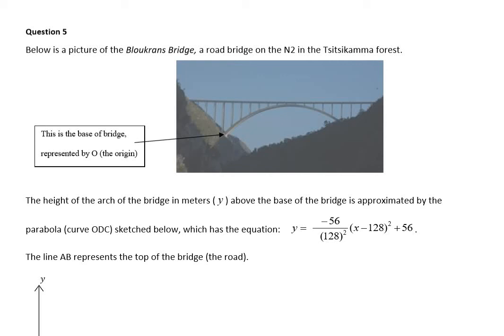This question says below is a picture of the Bloukrans Bridge, which is a bridge along the N2 in the Tsitsikamma Forest. It says the base of the bridge is represented by the origin. So what they're basically doing is putting an axis over there and over there. As you can see in the picture below, they're graphing that as a parabola. So this is maybe what engineers would do when they're building their bridge.